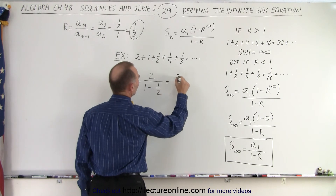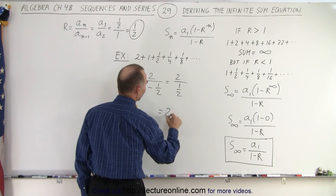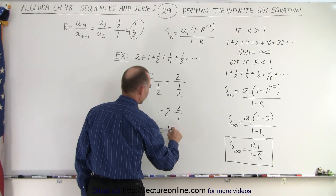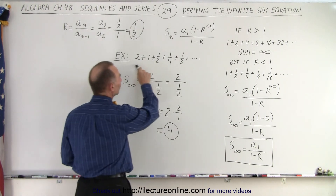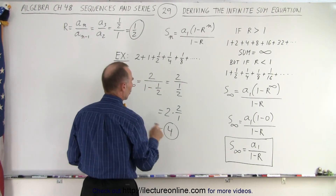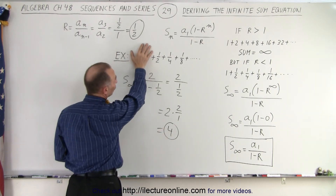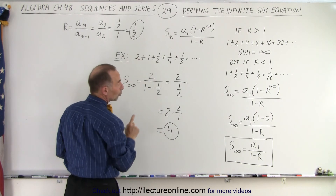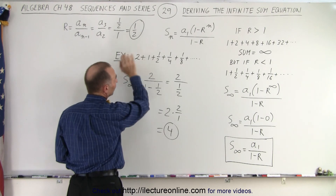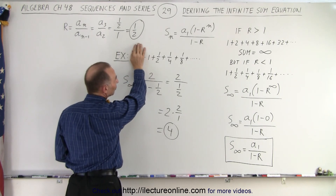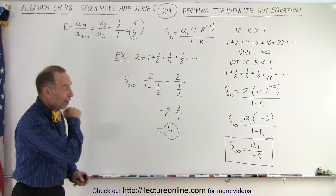This becomes 2 divided by (1 minus one-half), which is one-half. And 2 divided by one-half equals 2 times 2, which is 4. So the infinite sum of this series is equal to 4. Notice: if you take the first term away, it's equal to 2. Take the first two terms away and it's equal to 1. So the infinite sum of (one-half plus one-quarter plus one-eighth ...) equals 1, and the infinite sum of all terms equals 4. And that is how it's done.